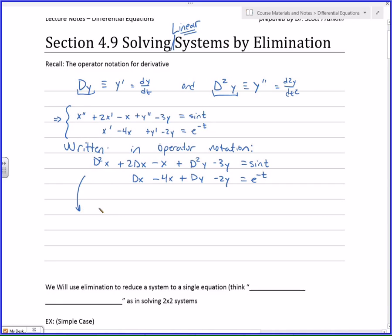But I'm going to take one further step, and I'm going to write it by basically factoring out the x. I'm going to write this as d squared plus 2d minus 1 times x plus d squared minus 3. And I say times. It's not really times. It's applied to y. And I write this as d minus 4 applied to x plus d minus 2 applied to y equals e to the minus t.